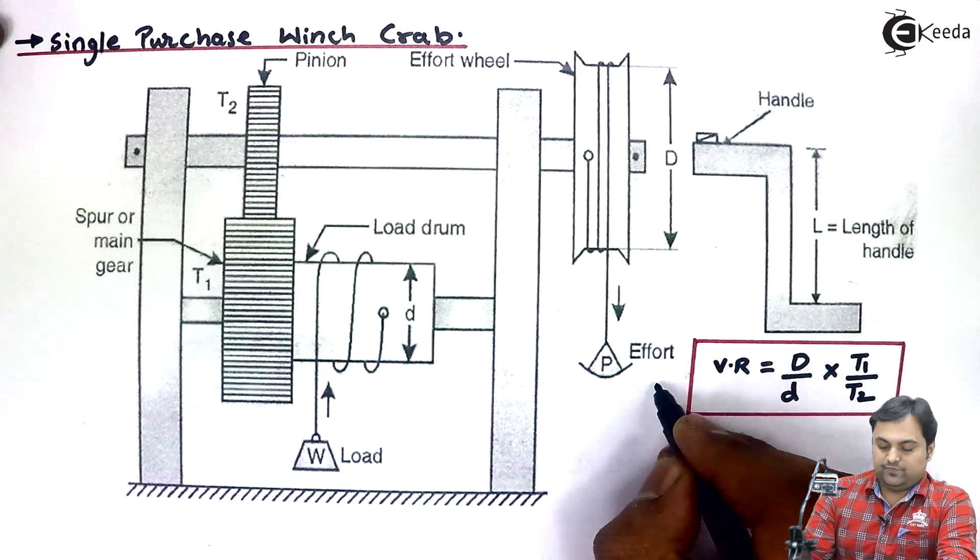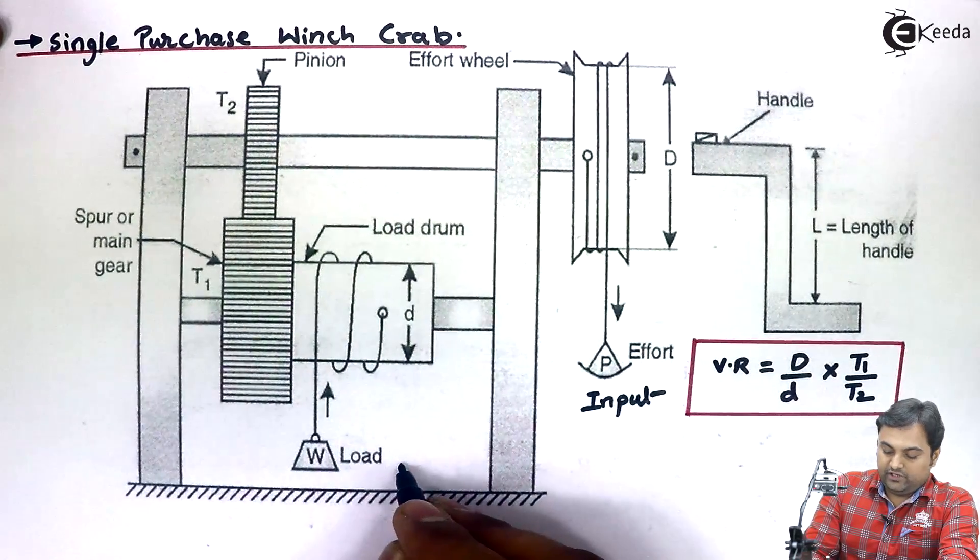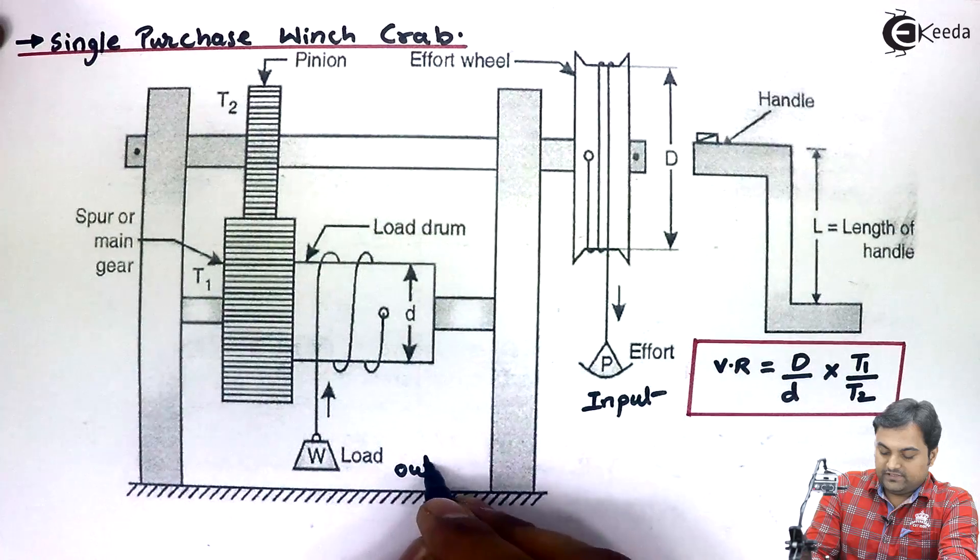As we have seen, by applying very small amount of effort, this is the input, we are able to lift a huge amount of load, that is the output. So this is an example of a simple machine.